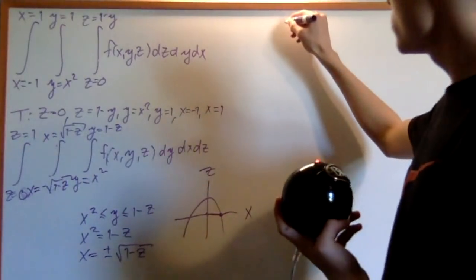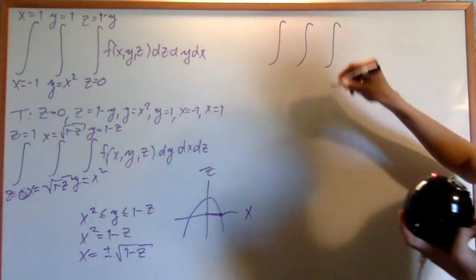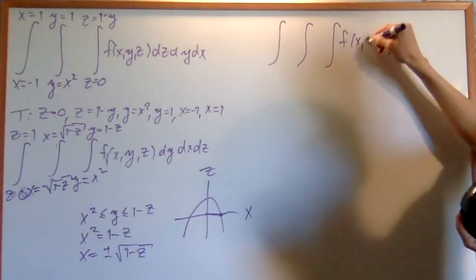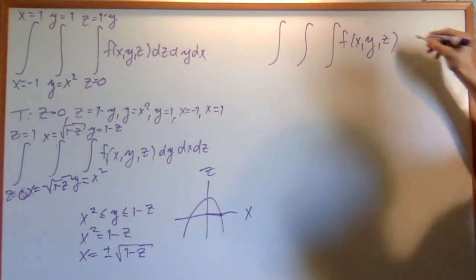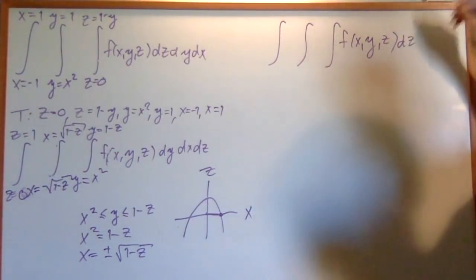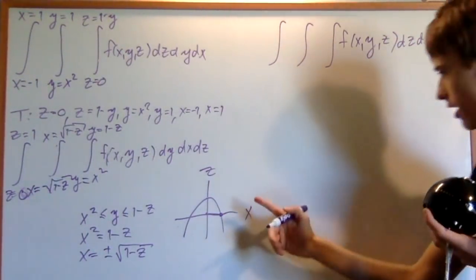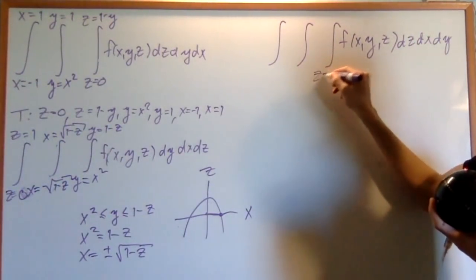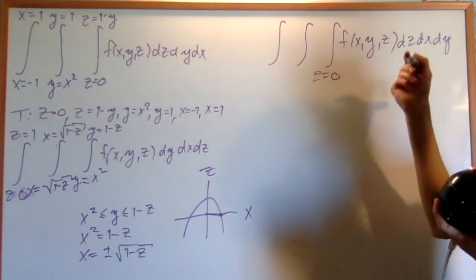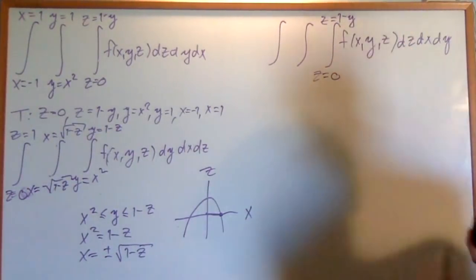Now let's do the order dz dx dy. For dz, z goes from zero until one minus y — nothing is changing there. So the z bounds remain z equals zero to z equals one minus y with no adjustment needed.